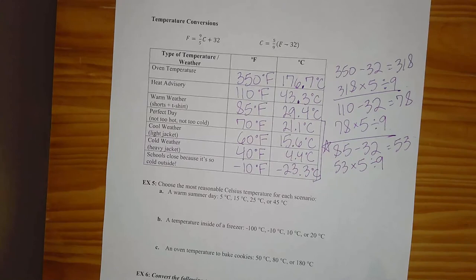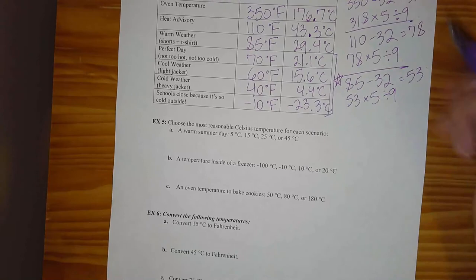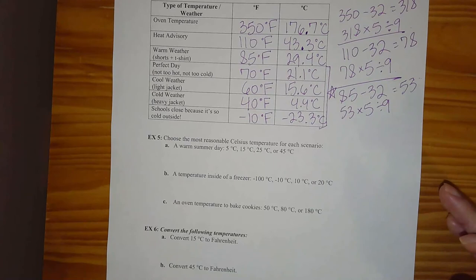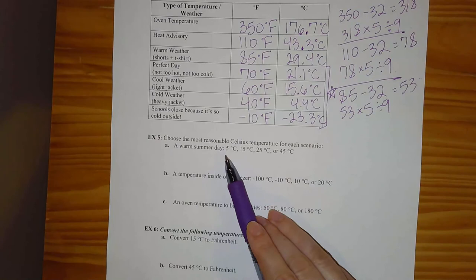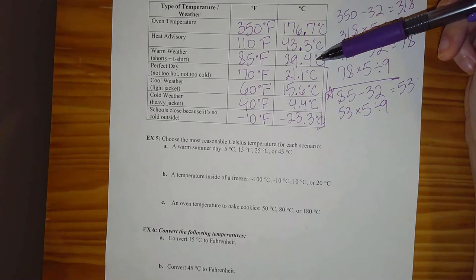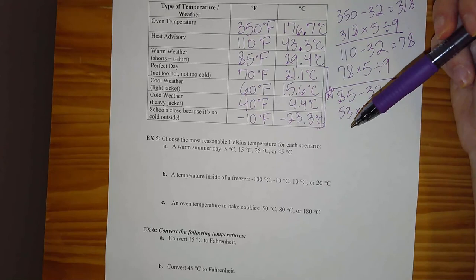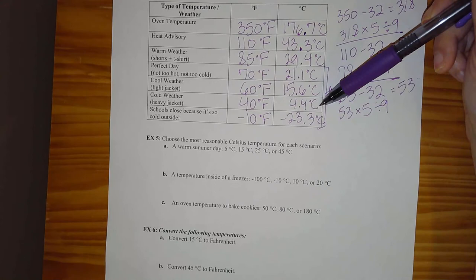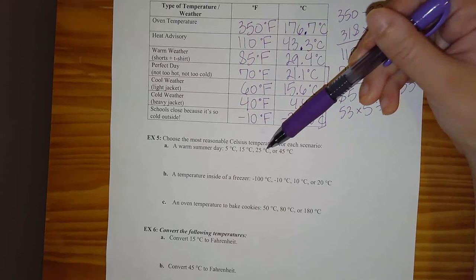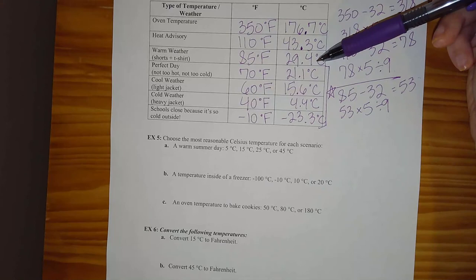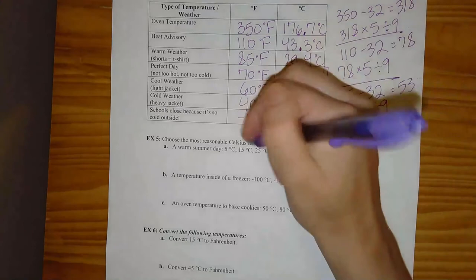Let's choose Fahrenheit temperatures for different scenarios — this table gives you a more practical sense of Celsius. First: a warm summer day. Our warm weather day was about 29.4°C. Looking at the options: 5°C is close to my cold-weather-jacket temperature; 15°C was my light-jacket weather; 25°C is right between perfect and warm weather, so that would be a nice summer day; 45°C is above a heat advisory. I'll go with 25°C for a warm summer day.